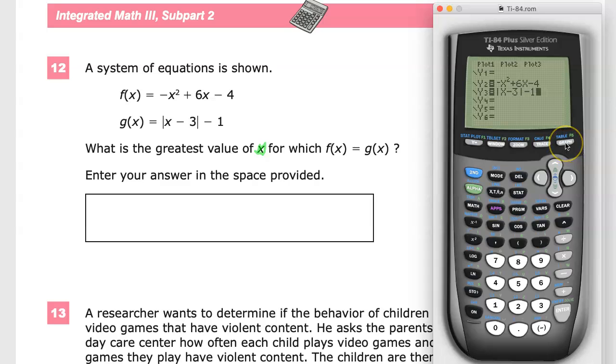Now I'm going to graph. So I can see that the point where I have the greatest value of x is going to be right here. Now there's a few ways that you can figure out what that answer is. You can start checking it out in the table, hit second, and then go to the table.